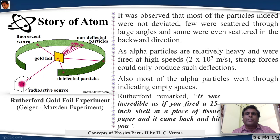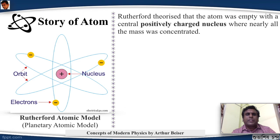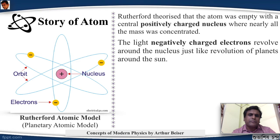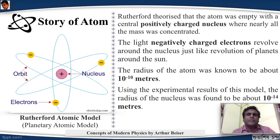According to this knowledge, Rutherford came with this planetary atomic model, or the Rutherford atomic model. He said that the atom was empty with a central positively charged nucleus where all the mass was concentrated. The light negatively charged electrons revolve around the nucleus just like revolution of planets around the sun, giving the name planetary atomic model. The radius of the atom was known to be about 10 to the power of minus 10 meters. Using the experimental results of this model, the radius of the nucleus was found to be about 10 to the power of minus 14 meters.